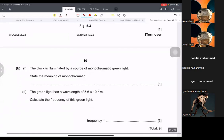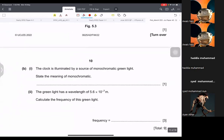The clock is illuminated by source of monochromatic green light. Monochromatic means mono means one, chroma means frequency or wavelength, whatever you write. So you're going to write single wavelength, or you could write frequency. It is up to you. Whatever you want to write. Wavelength, frequency, light. Monochromatic.